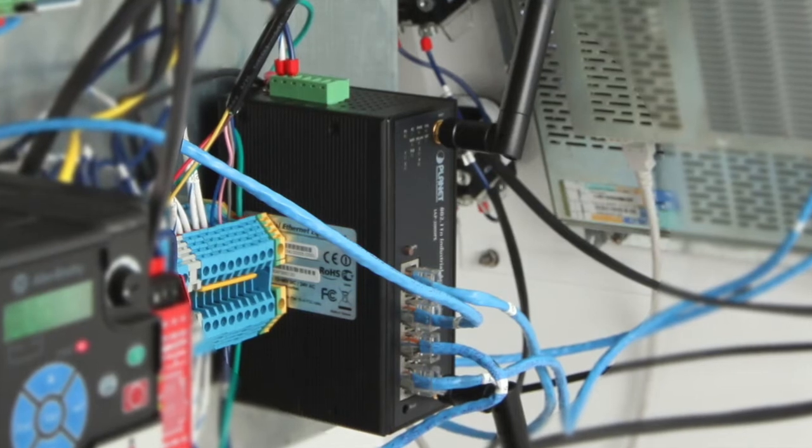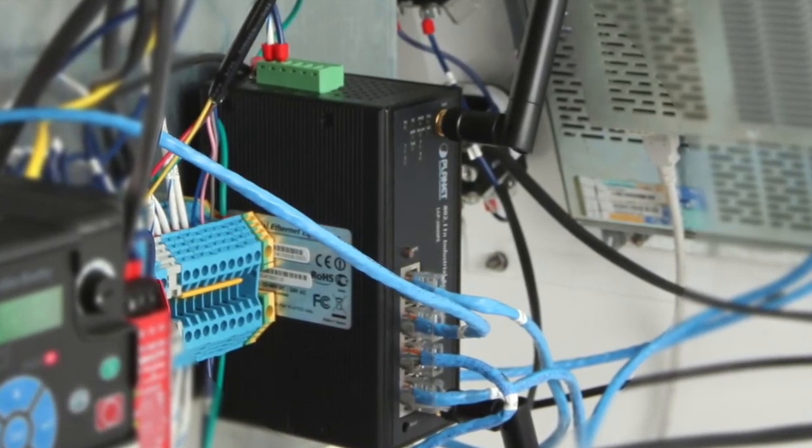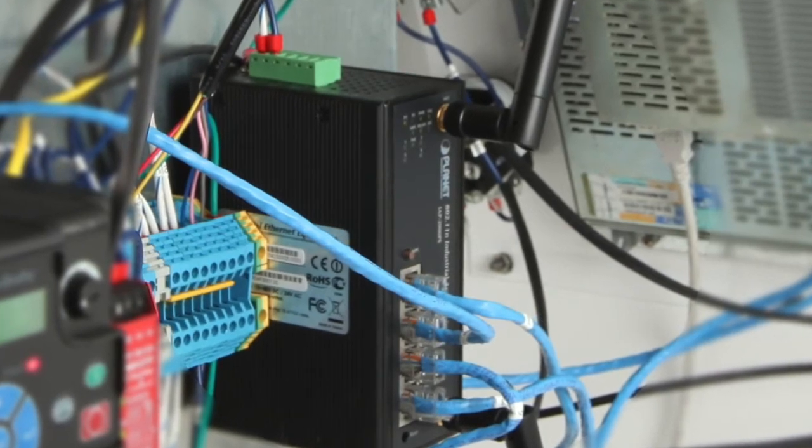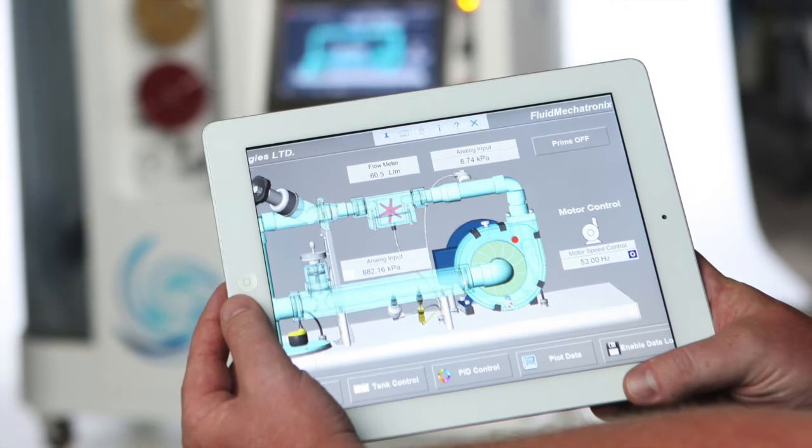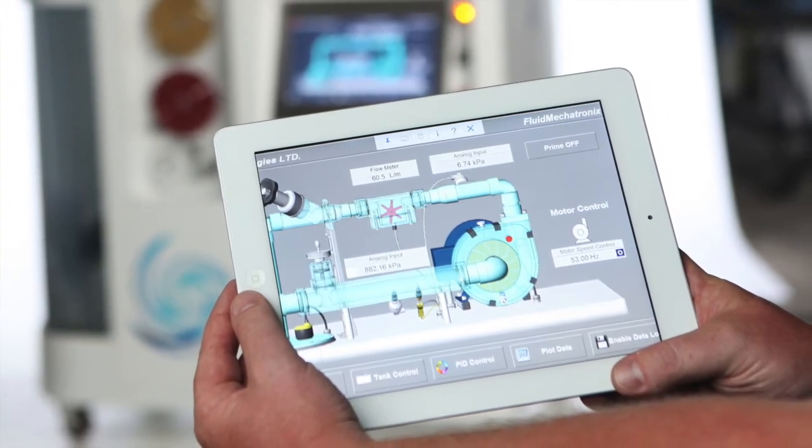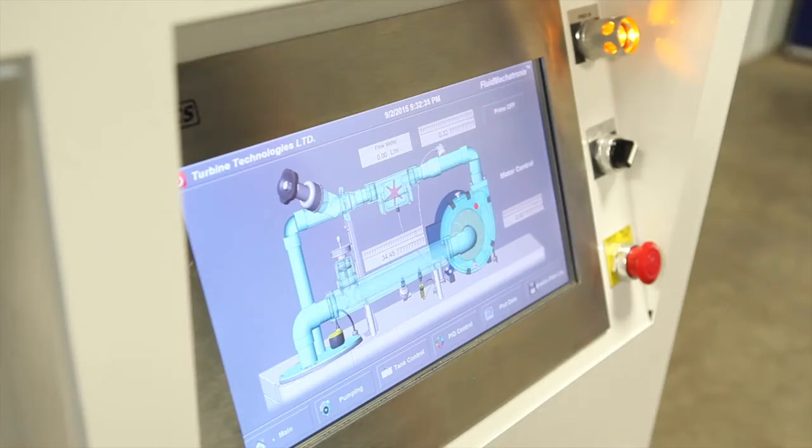Students learn how an industrial-spec Ethernet system connects all these elements together so they can effectively communicate with each other. They also discover that Ethernet enables them to connect with and control the system remotely through wireless devices, versus having to accomplish all communications strictly through the local HMI.